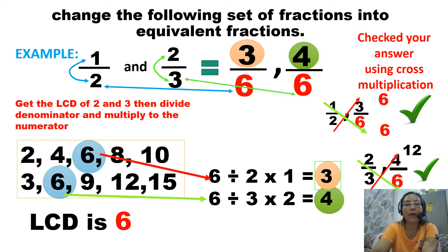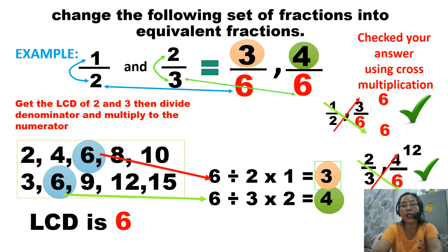So remember — 3/6 and 4/6 are NOT equivalent to each other. The equivalent fraction pair is 1 half and 3/6; another equivalent pair is 2 thirds and 4/6. If you cross multiply 3/6 and 4/6: 3 times 6 equals 18, and 6 times 4 equals 24 — 18 and 24 are not the same, which means they are not equal fractions.